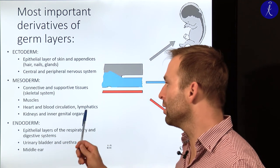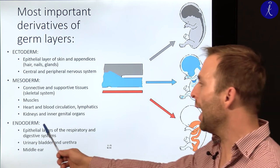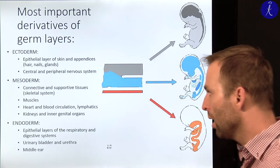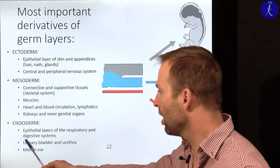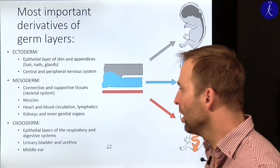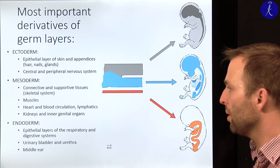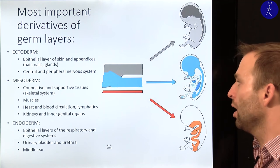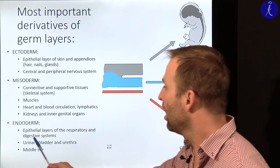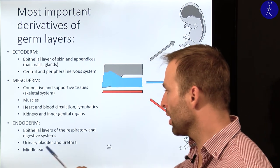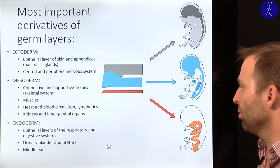The kidneys and internal genital organs are also mesodermal in origin. Endoderm — the innermost germ layer — develops into the epithelial layers of the respiratory system and digestive system: trachea, lungs, and GI tract. The urinary bladder and urethra are also endodermal, and the middle ear is also endodermal in origin.